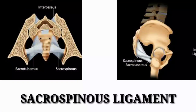The sacrospinous ligament runs deep to the sacrotuberous ligament, arising from the lateral margin of the caudal end of the sacrum and coccyx, and inserts over the ischial spine.